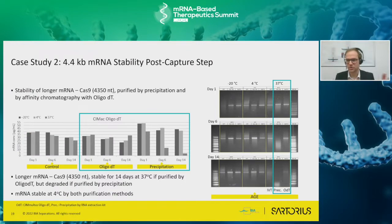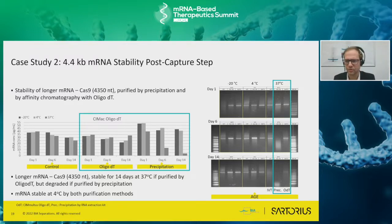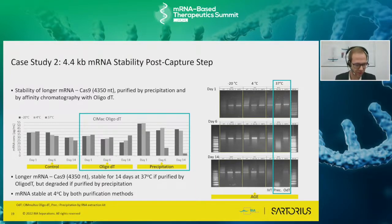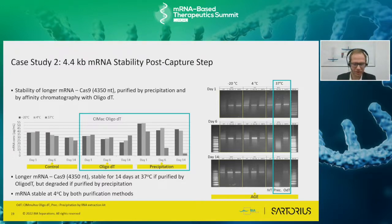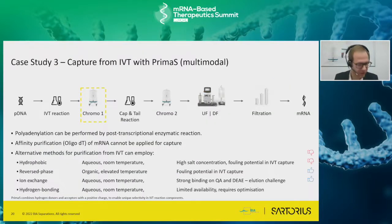We then tested a larger molecule - a 4.4 kilobase construct closer in size to a COVID vaccine - and saw the same result. In a two-week study at 37°C, oligo-dT purified material was stable while precipitated material was degraded. When teams who perform precipitation want to subsequently perform oligo-dT purification, my advice is: oligo-dT does all the jobs that precipitation would do but does it better and more gently. I would advise avoiding precipitation altogether.